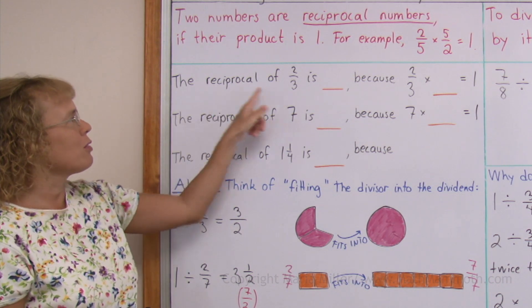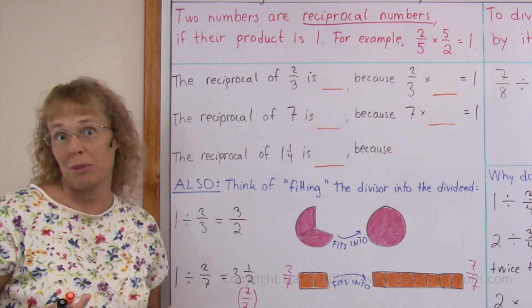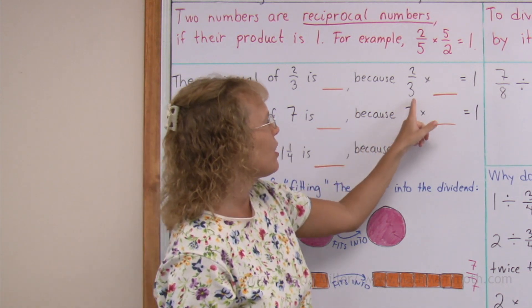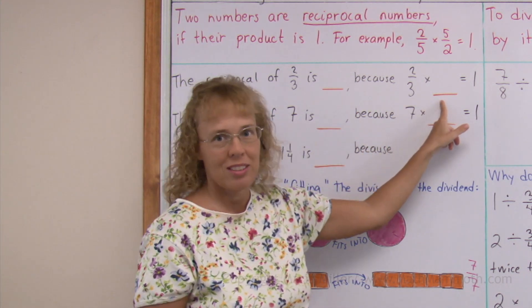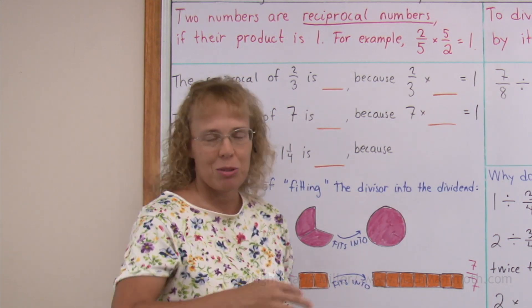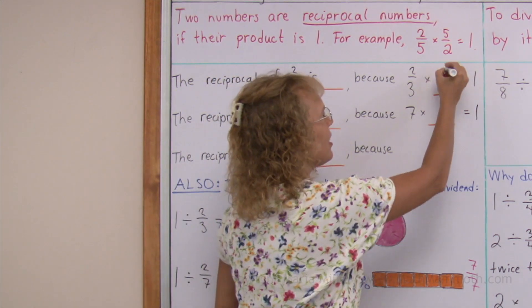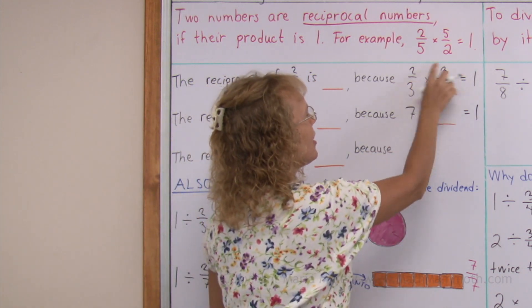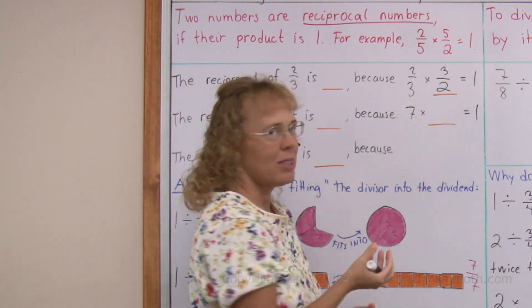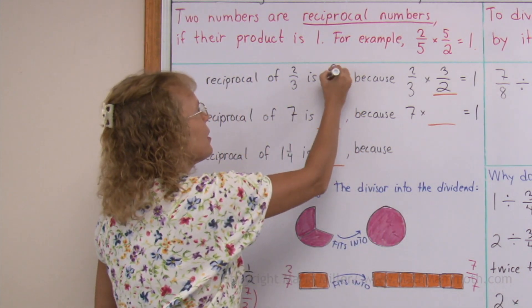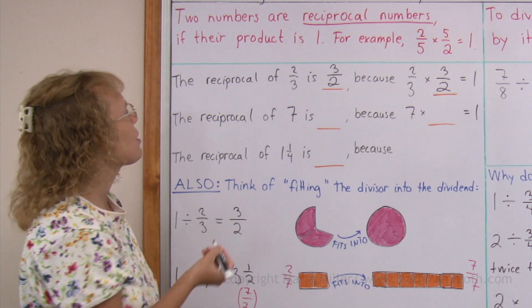The reciprocal of 2 thirds is what number? It's some number, so that 2 thirds times that number equals 1. What we can do is flip the fraction. I can write here 3 over 2, because then, in the multiplication, I get 6 on top, 6 on bottom, 6 sixths, which equals 1. So, 3 halves was the reciprocal of 2 thirds.